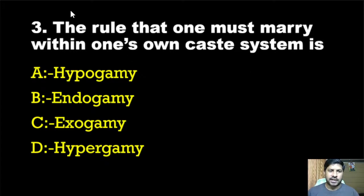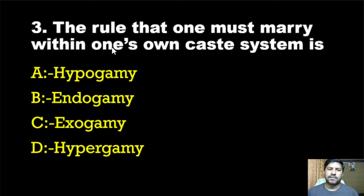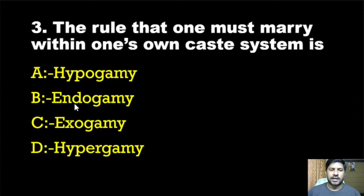If you understand all four terms — hypogamy, endogamy, exogamy, and hypergamy — you can easily score one mark, as one of these is usually asked in most exams.